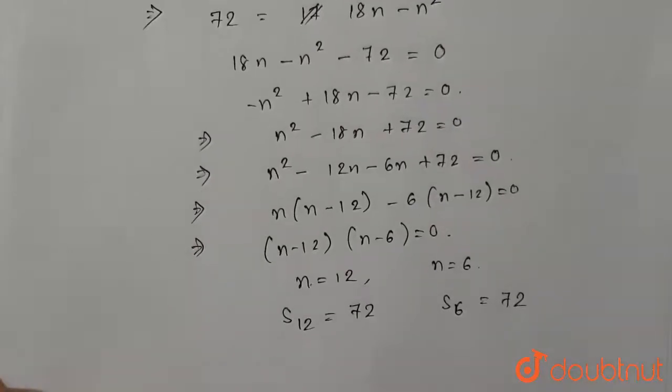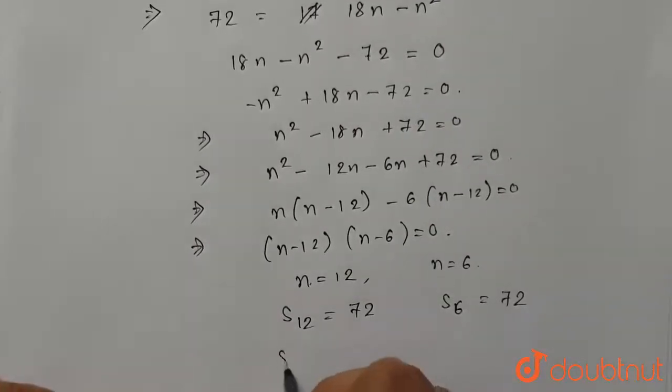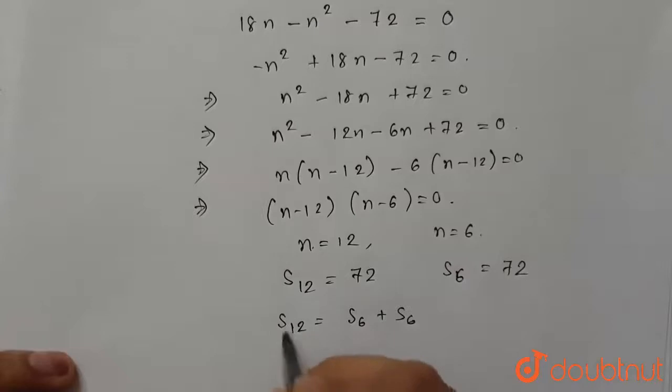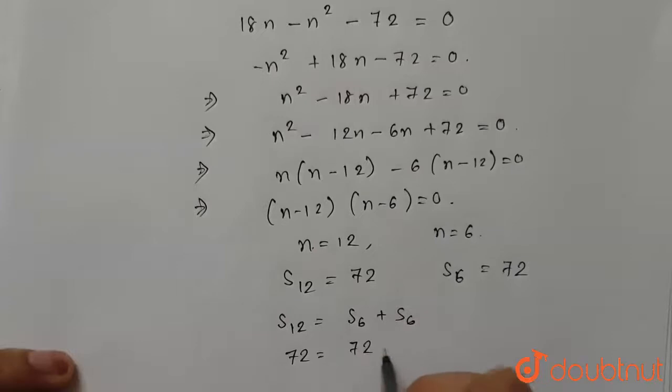But how is that possible? So we can write S₁₂ = S₆ + S₆. Now we know S₁₂ = 72. If the sum of the 6 terms is equal to 72 and the sum of the other 6 terms is equal to 0, then only this is possible.